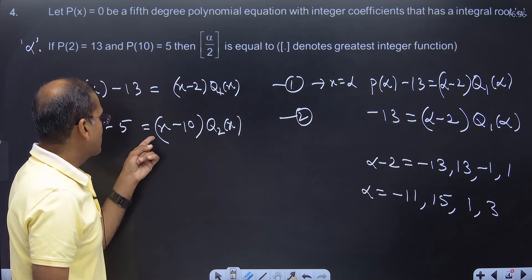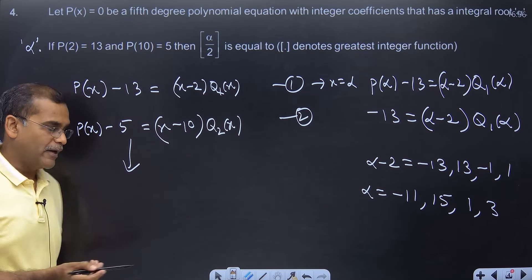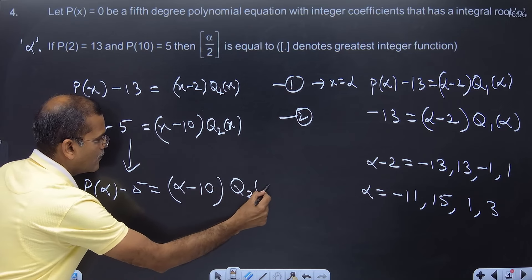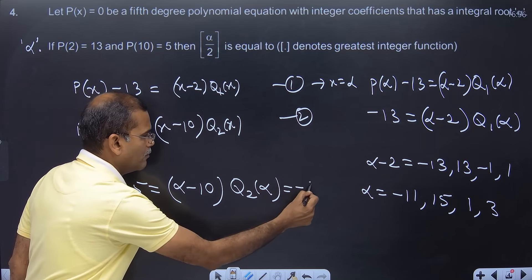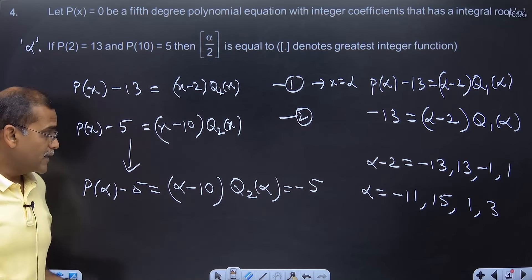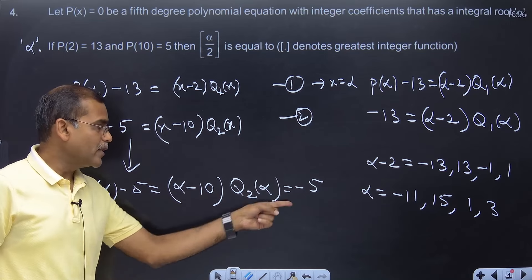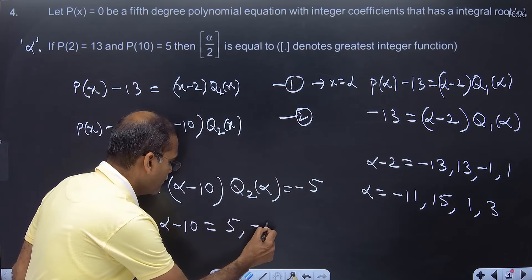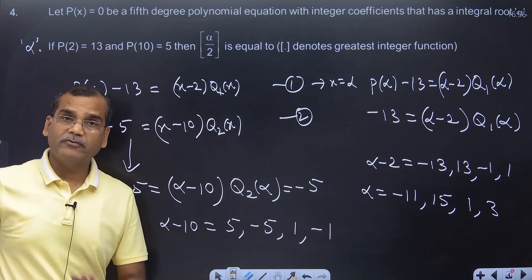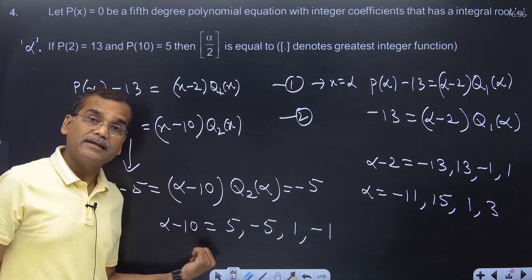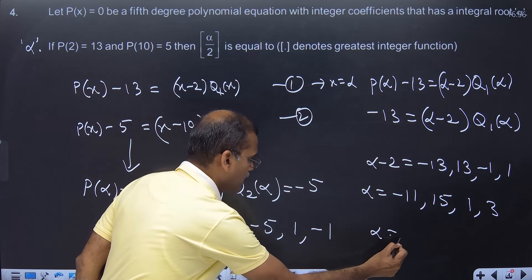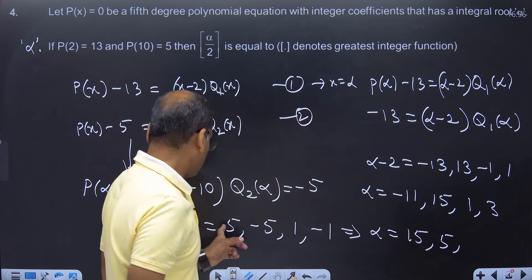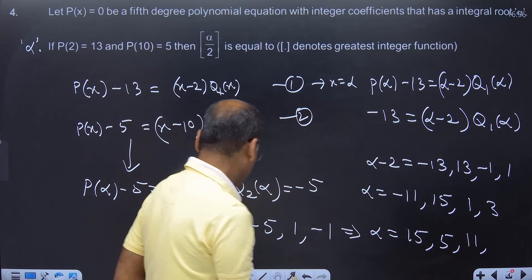Right, now you understand, similarly, go for this. Put x equals alpha. Same step leads to minus 5 equals (alpha minus 10) times Q2(alpha), because P(alpha) is 0. Now you understand, again the same logic - product of 2 integers equals minus 5. So I can comment that (alpha minus 10)'s possible values are 5, minus 5, 1, minus 1. I don't find any other values alpha minus 10 can take. From here, alpha comes out to be 15, 5, 11, 9.